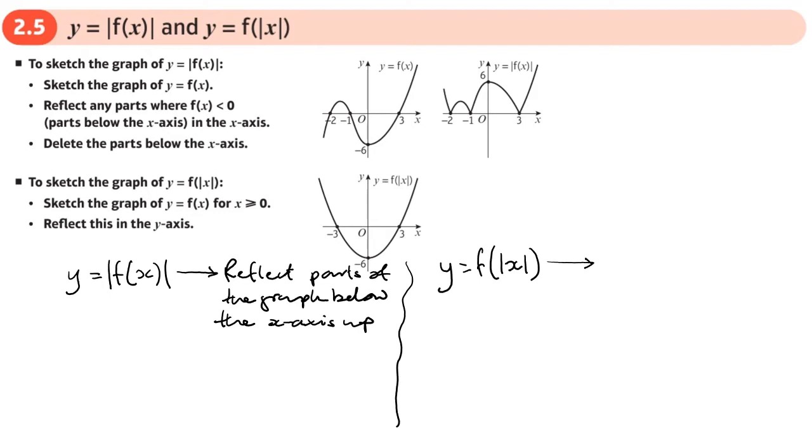Basically what we do is we take the part of the graph where x is positive, so that will be here, and we reflect it over to the other side.